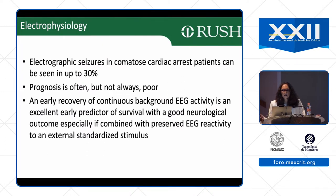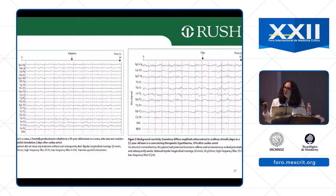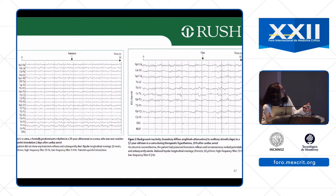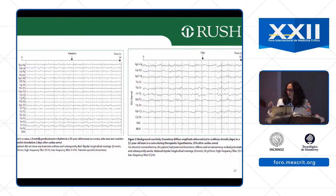To tell if patients are going to recover based on EEG, you look at background activity reactivity. If the background activity reacts to any stimulation — clapping, calling their name, or painful stimuli — that indicates better outcomes. You don't necessarily need continuous EEG; even a spot EEG checking for background reactivity is useful. A non-reactive background on EEG is associated with poor outcomes, while a reactive background predicts better outcomes. Continuous EEG monitoring also helps pick up status or seizures that can be treated.